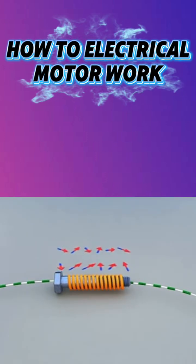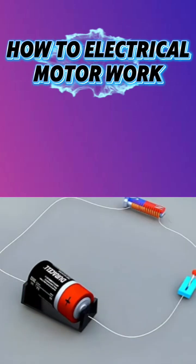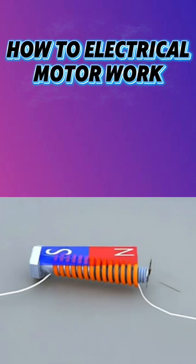The electric current creates a magnetic field, turning the bolt into an electromagnet. Switch the battery and the poles switch.